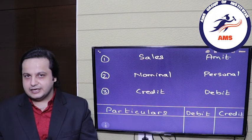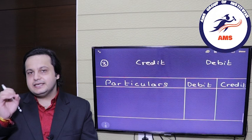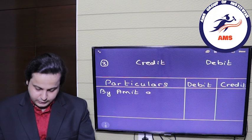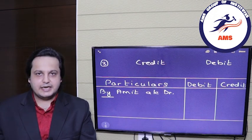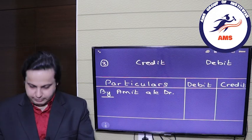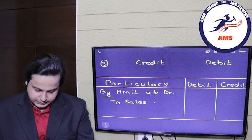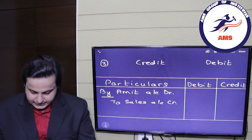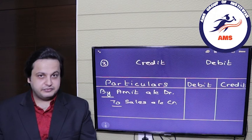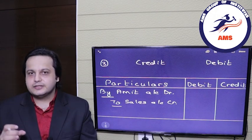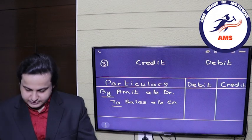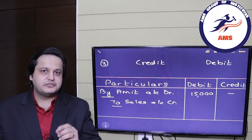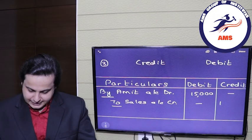We have the journal entry. The format is: 'By Amit Account Debit' — always start with 'By.' Then 'To Sales Account Credit' — the credit entry always starts with 'To.' The amount was 15,000 rupees. Amit is being debited, so we write 15,000 in the debit side of Amit's account. Sales is being credited, so we credit 15,000 rupees in the sales account.